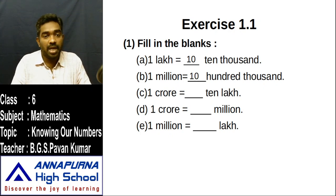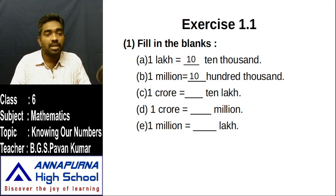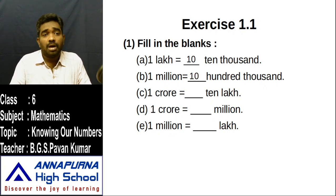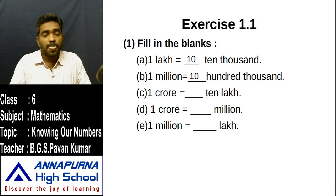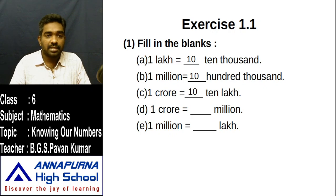Next one: one crore is equal to how many ten-lakhs? In one crore, how many zeros are there? Seven zeros. In ten-lakh, how many zeros are there? Six zeros. The difference is one zero. Put one before the zero — the answer is ten. So one crore is equal to ten ten-lakhs.